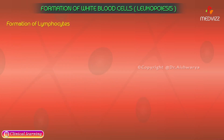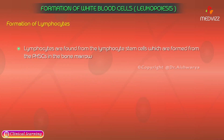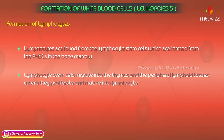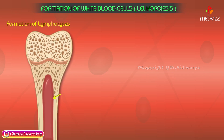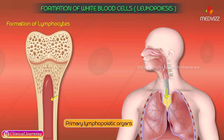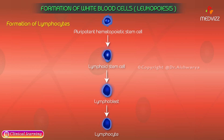Lymphocytes arise from lymphocyte stem cells, which are formed from the pluripotent hematopoietic stem cells in the bone marrow. These lymphocyte stem cells migrate into the thymus and peripheral lymphoid tissue, where they proliferate and mature into lymphocytes. In humans, the bone marrow and thymus form the primary lymphopoietic organs, where lymphoid stem cells undergo spontaneous division independent of antigenic stimulation.